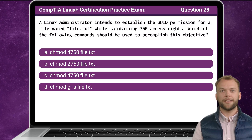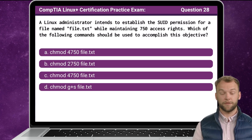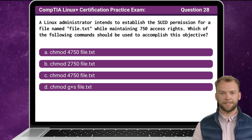Question 28. A Linux administrator intends to establish the set user ID permission for a file named file.txt while maintaining 750 access rights. Which of the following commands should be used to accomplish this objective?